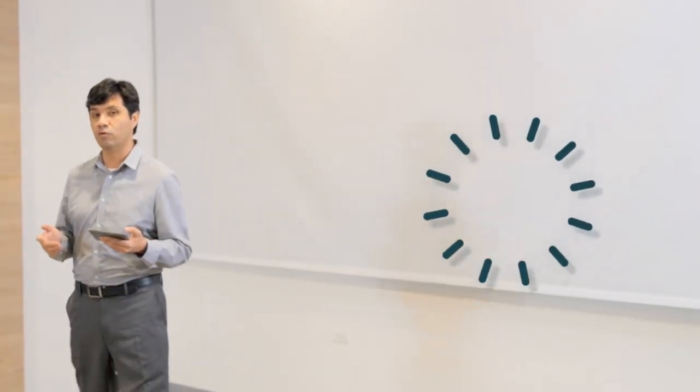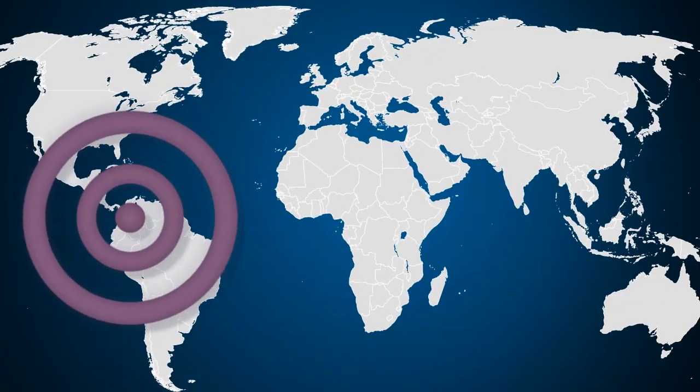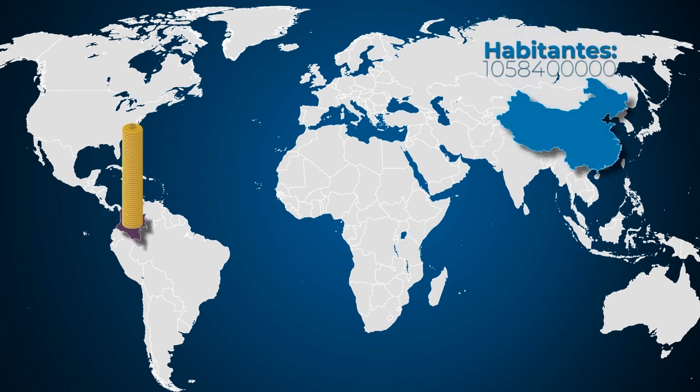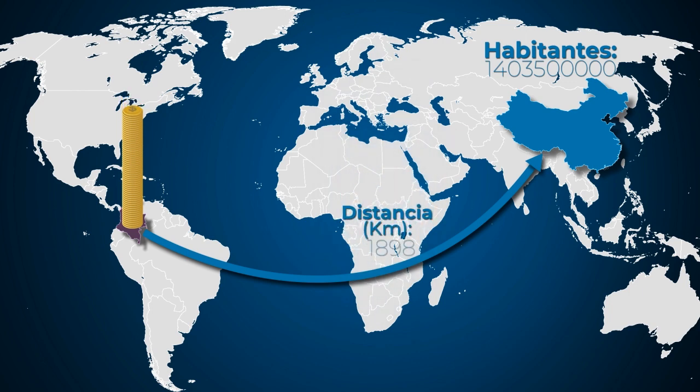El análisis CAGE se parece al modelo de gravedad de Newton. En ese sentido, cuando nosotros hablamos de gravedad, estamos hablando básicamente de la distancia que existe entre países. Esto consiste en que a mayor tamaño los países tendrían mayor comercio, pero a mayor distancia tendrían menos comercio, lo que implica una relación directa con el término de la gravedad. Sin embargo, también se hablan de otros elementos que deben ser incorporados dentro del análisis del CAGE.